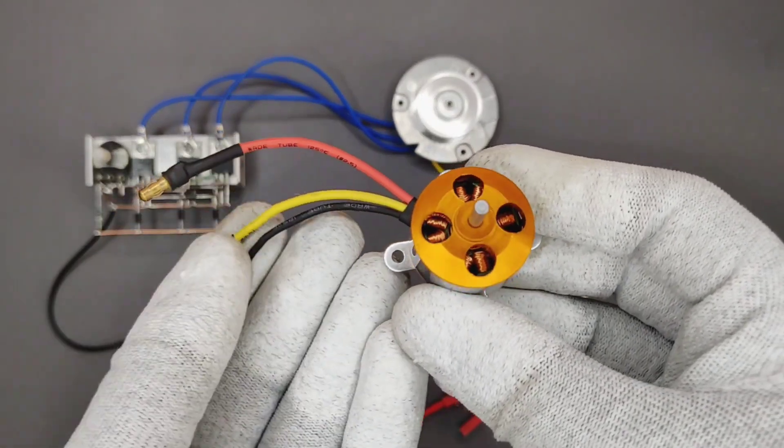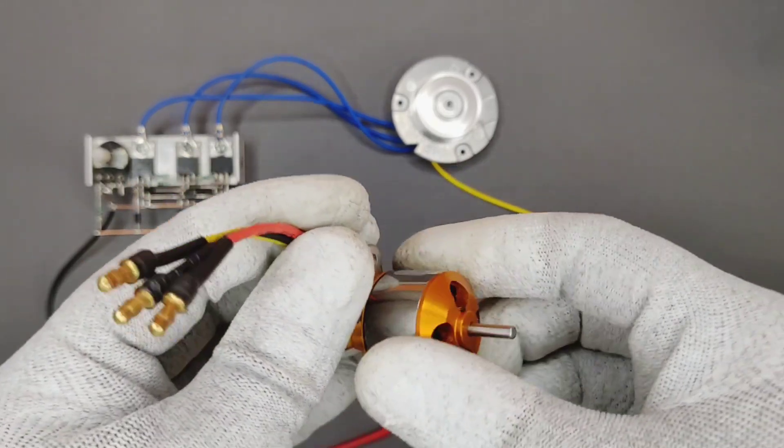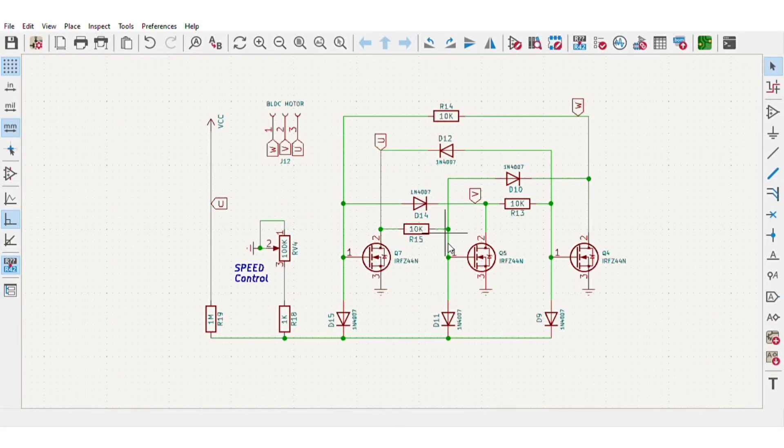But this drone motor has 3 phases called the delta winding with no common wire. So to drive this BLDC drone motor, I little modified the circuit diagram.